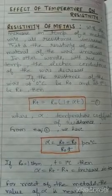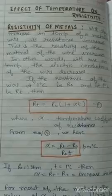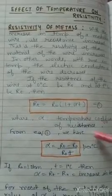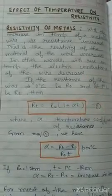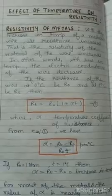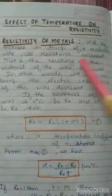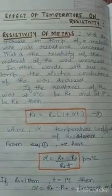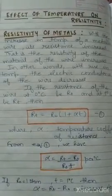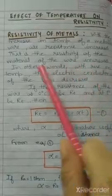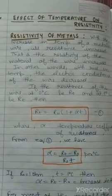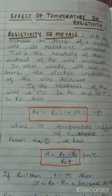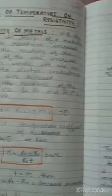First, we are going to discuss about the resistivity of metals. Metals are good conductors. With the increase in temperature of a metallic wire, its resistance increases, and the resistivity of the material of the wire also increases. To explain why, we need to discuss this formula.